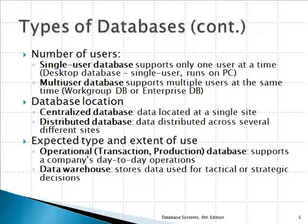If hundreds of users from the entire organization access the database, it is called an enterprise database. Based on location, we have centralized and distributed databases. In a centralized database, all data is physically saved at a single site. In a distributed database, the data is saved at different sites. Based on the role of the database — its expected type and use — we have operational databases and data warehouses. An operational database supports day-to-day operations, also called a transaction or production database. A data warehouse is built as an archive for tactical or strategic decision-making.